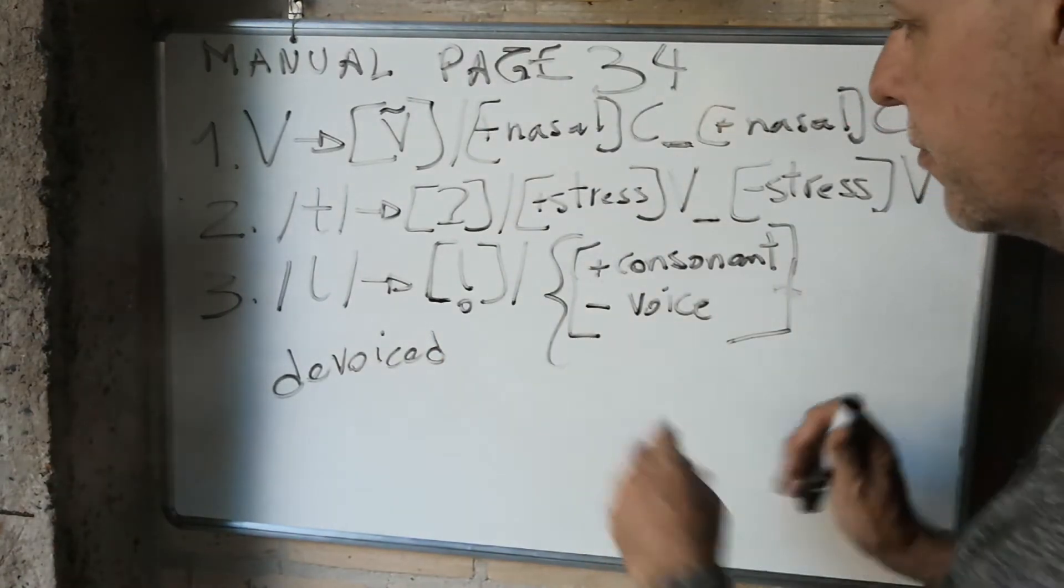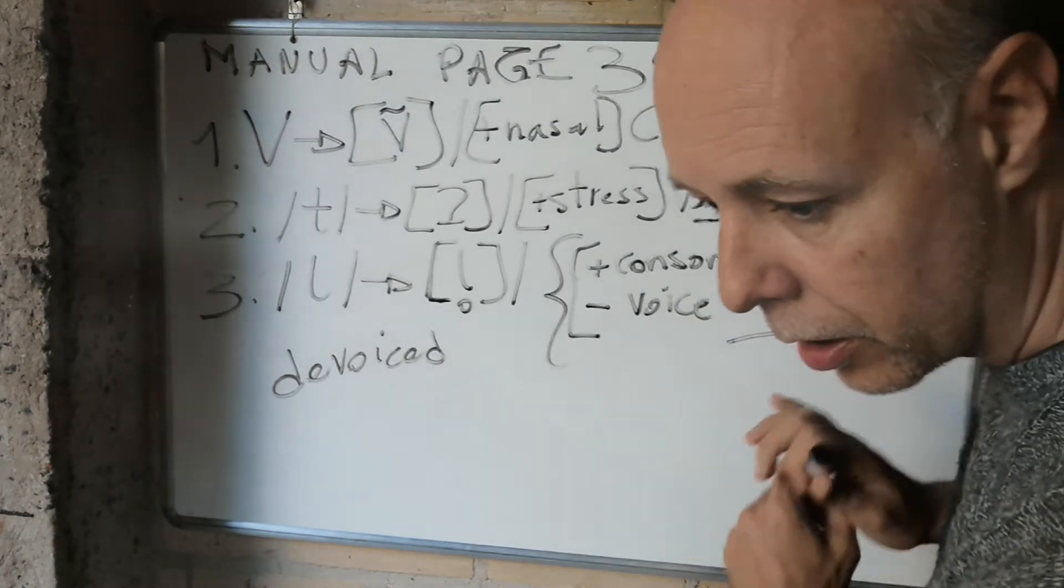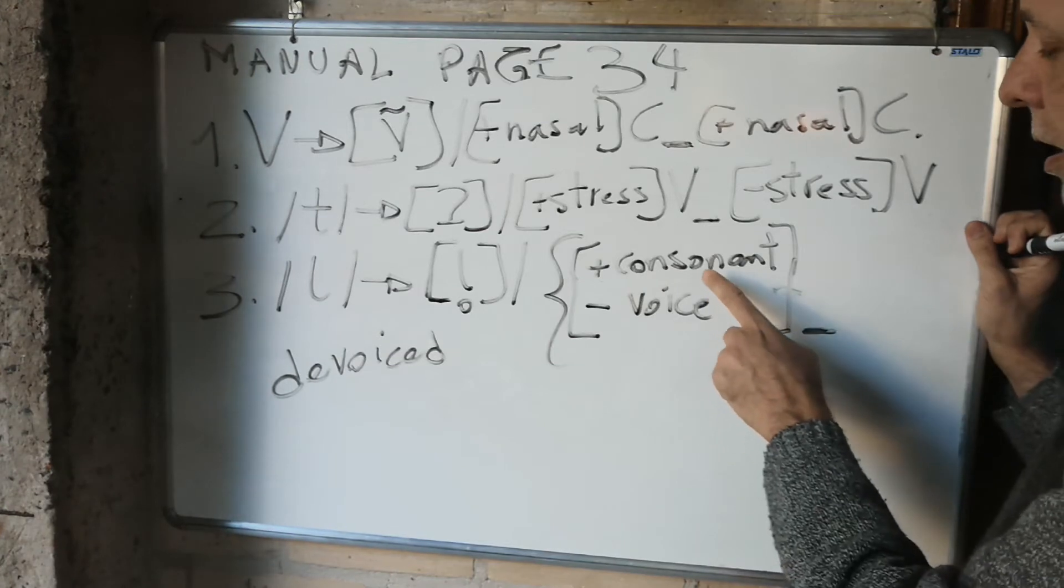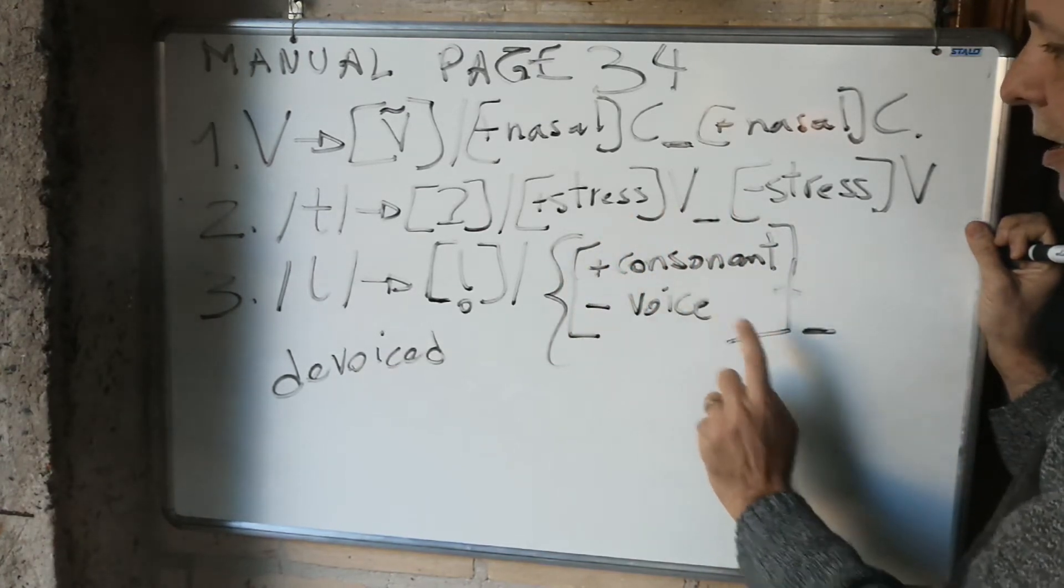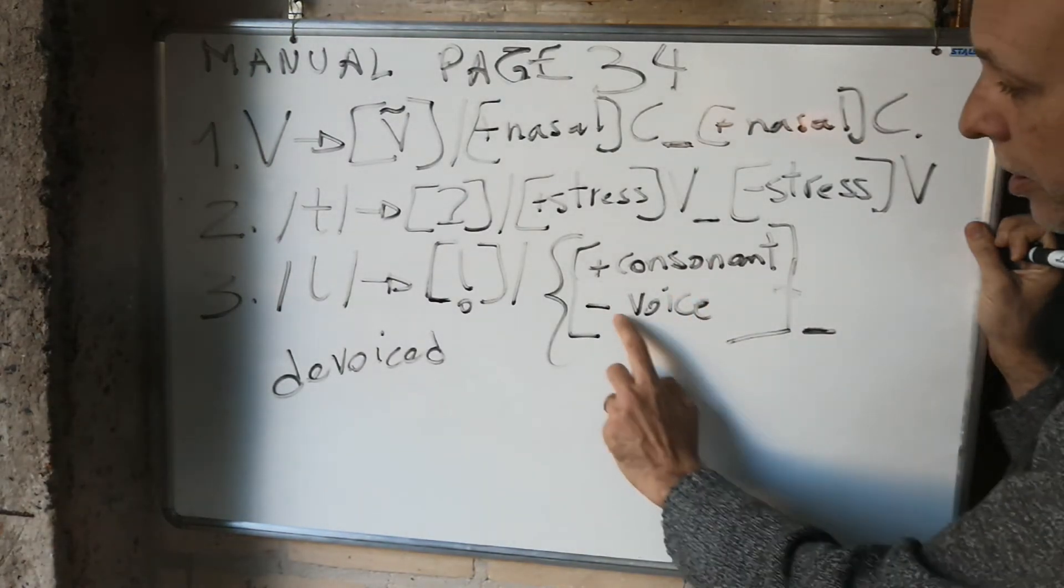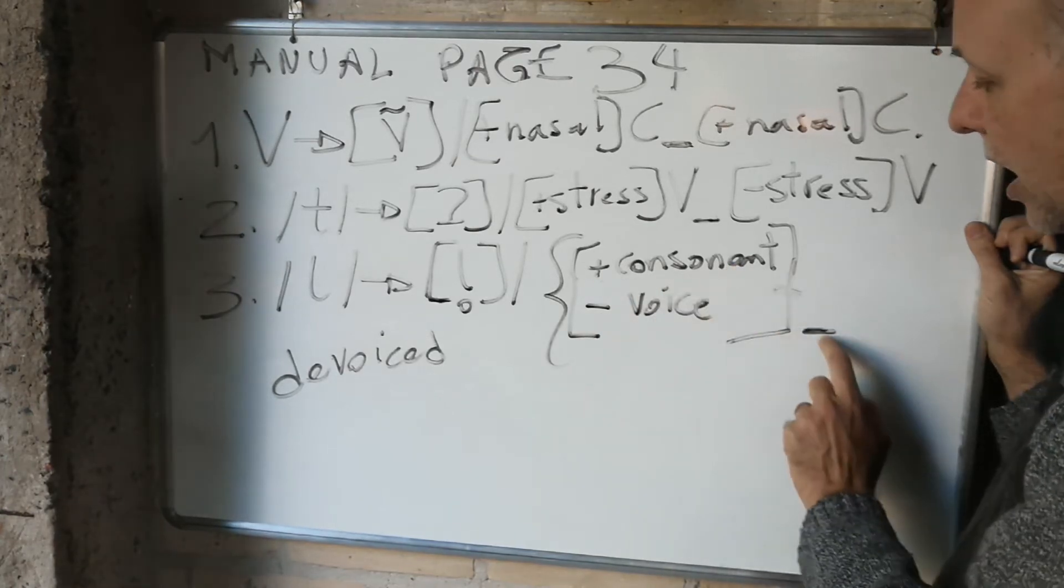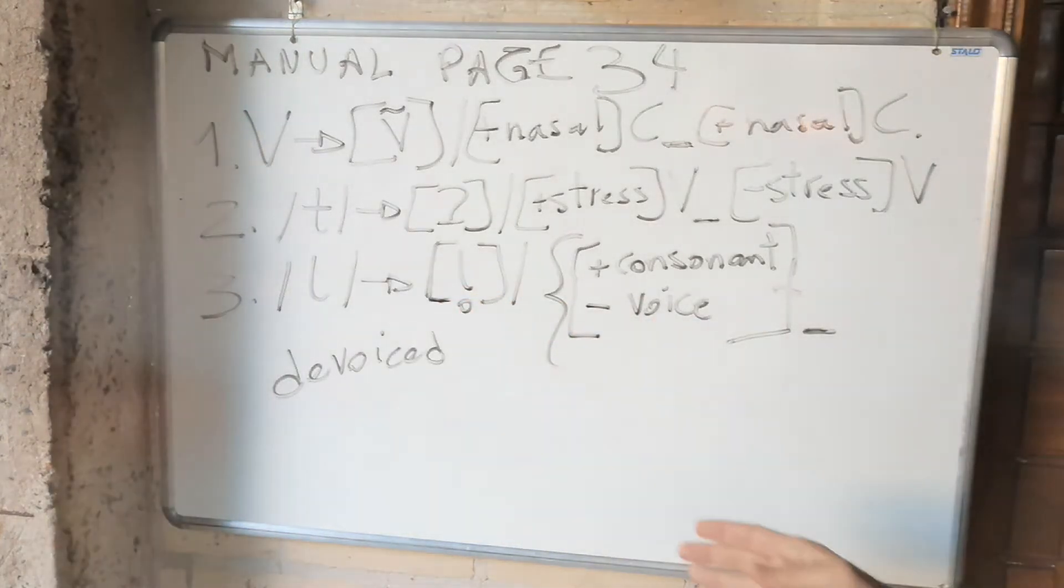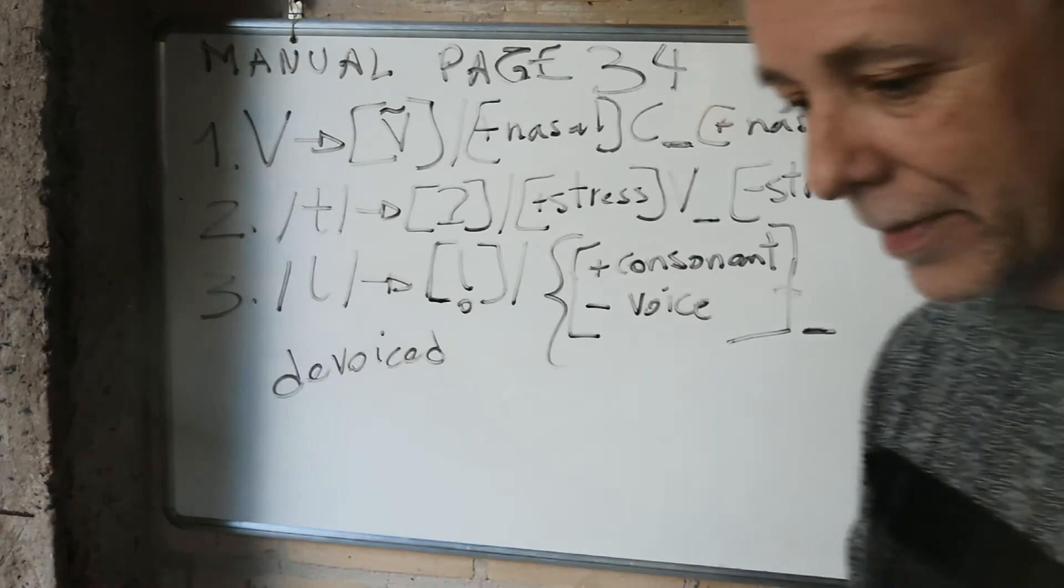There is an underscore here, so it is after this - after a voiceless consonant. The sound L becomes devoiced after a voiceless consonant. Alright? So we do number four together? Because I have space, just because of that.